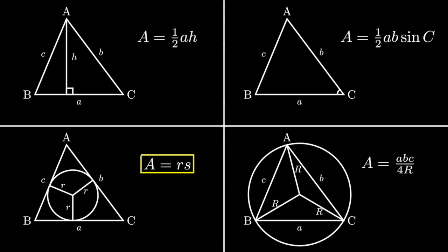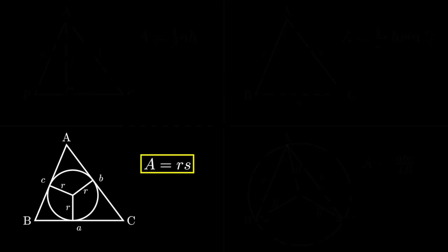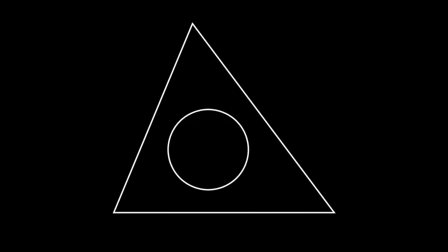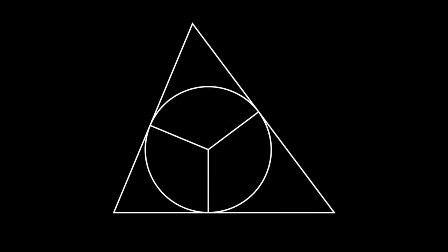Notice first in our list of area formulas that there is one formula with s in it, a equals rs. That means we should be looking for properties to do with incircles. So let's draw our triangle with a circle inscribed in it. Let's label the vertices and the side lengths a, b, and c.